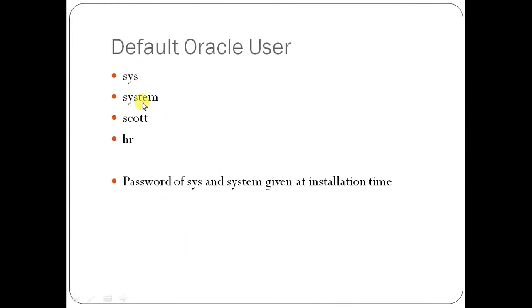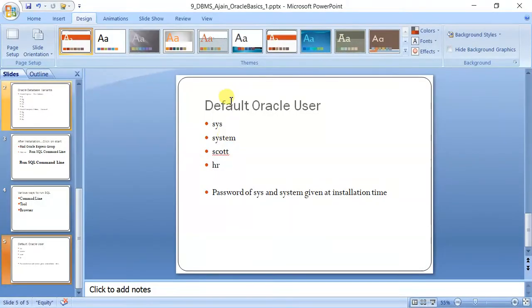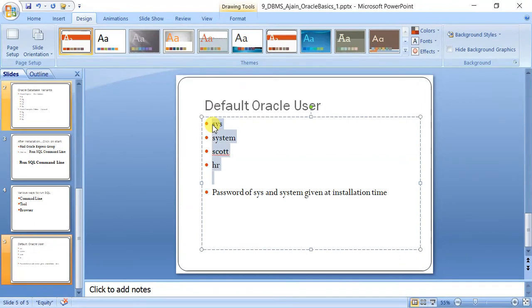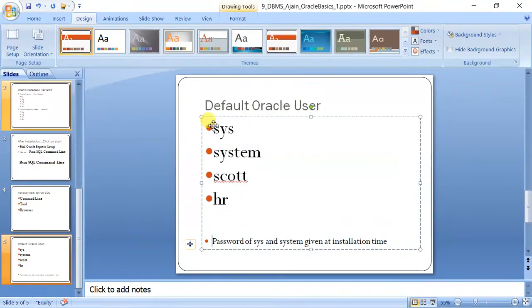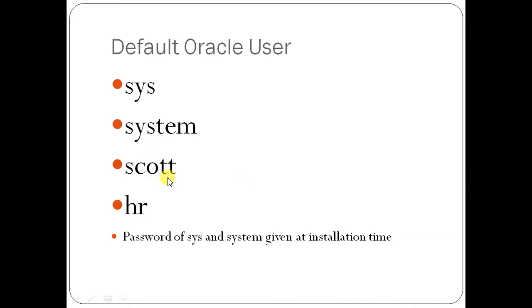There are a few default Oracle users: sys, system, hr, and scott. Scott is a very old user and may not be available in 18c or 12c. But sys and system are default users, and the password for these two is the single common password given at installation time — that is why I asked you to remember it. You can log in with either sys or system, but try system first.